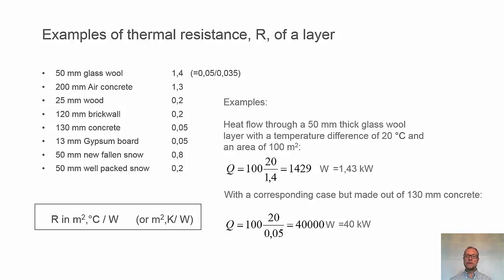Let's take an example. We'll calculate the heat flow through a 50 mm thick glass wool layer. We have a temperature difference of 20 degrees across the layer, and the total area is 100 square meters.